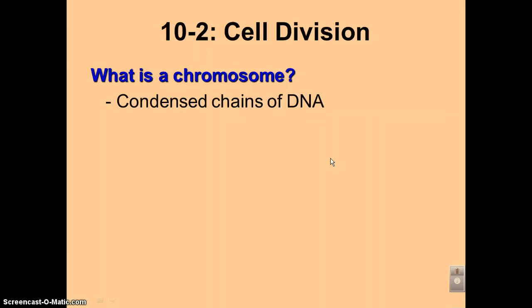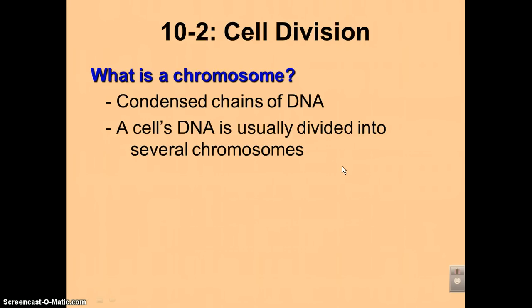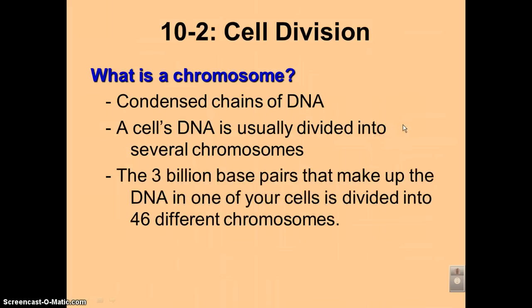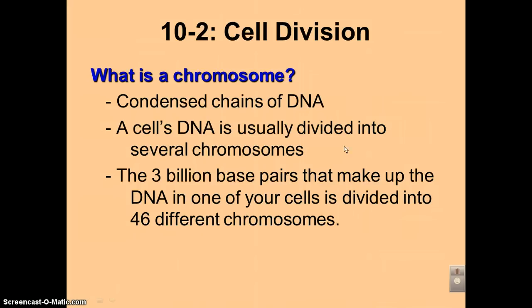What is a chromosome? A chromosome is a condensed chain of DNA — think of it as coiled up chromatin. Now, the cell's DNA, which is called the genome, is typically divided up into several chromosomes. For example, in humans there are three billion base pairs that make up the DNA. So imagine you have a ladder with three billion steps — you need to chop that into smaller pieces to make it easier to carry around. In our case, we chop it up into 46 different pieces, or 46 different chromosomes.